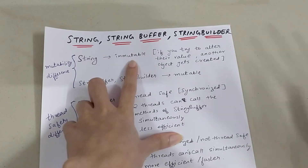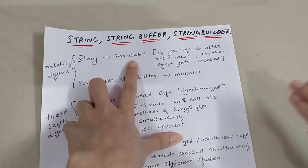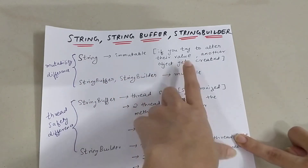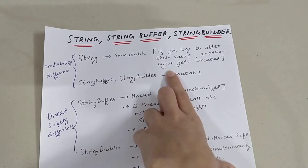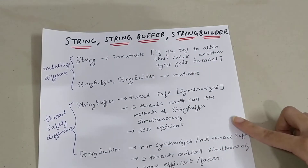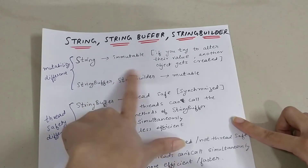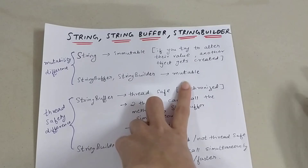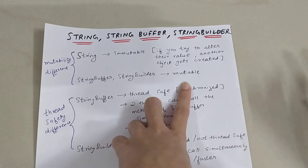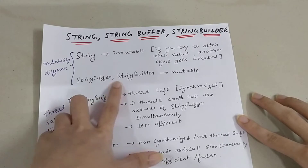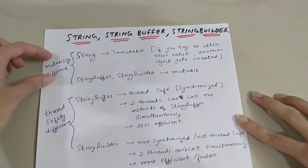String is immutable. Immutable means it cannot be changed. If you declare a String variable and you want to change its value, a new object will get created. So if you try to alter the value, another object gets created.